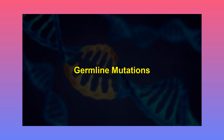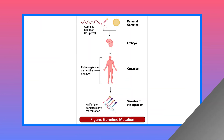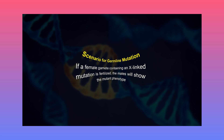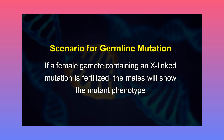Germline mutations are mutations in the germ tissues of the body and may be transmitted to the progeny. Dominant mutations are seen in the first generation after the mutation occurs. If a female gamete containing an X-linked mutation is fertilized, the males will show the mutant phenotype. Recessive mutations will only be seen upon the chance meeting with an individual carrying the recessive allele too. Thus, the recessive mutation may remain hidden for many generations.